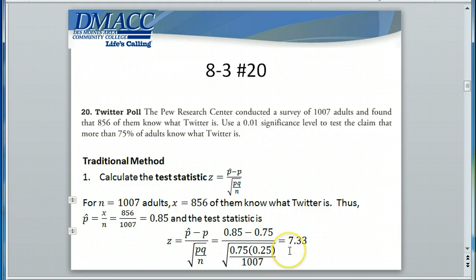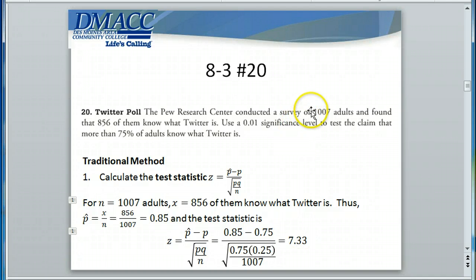Standardizing using the normal distribution, we find that 0.85, or 85%, is 7.33 standard deviations from the population proportion we assume to be true of 75%. Seven standard deviations — that's way far to the right. Right away that tells you something: this sample statistic of 85% is definitely very significantly greater than what we assume to be true of 75%.